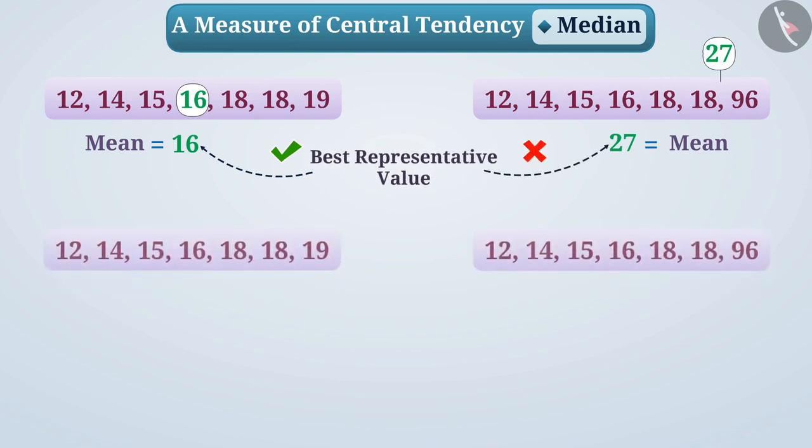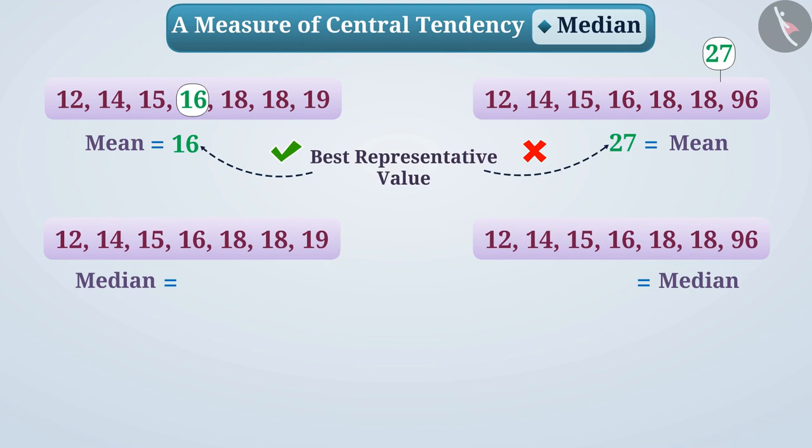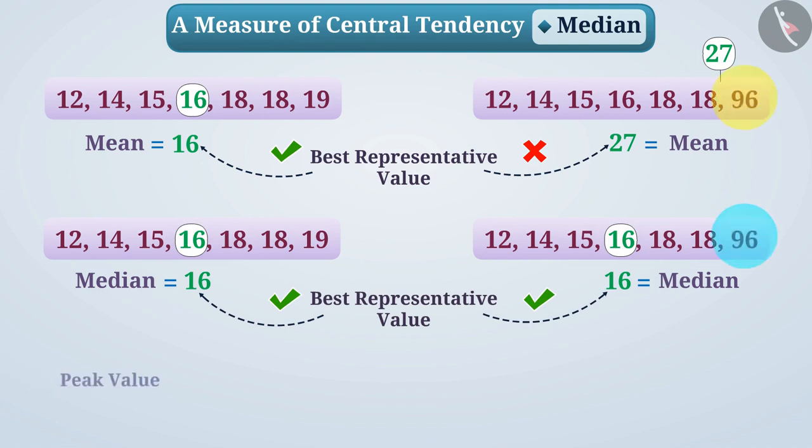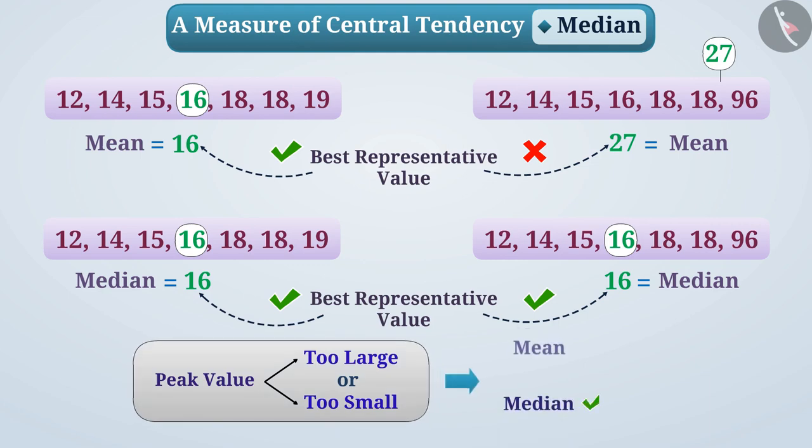But here, the median of the data in both groups is 16. Since the values of most observations in each group are around 16, we can say that in both cases, 16 is the best representative value. In this way, when the peak values in the data are too large or too small, the median is a better choice than the mean.